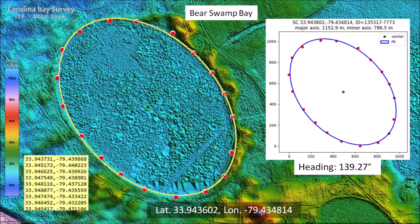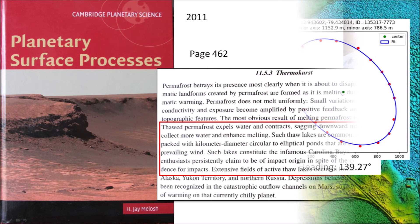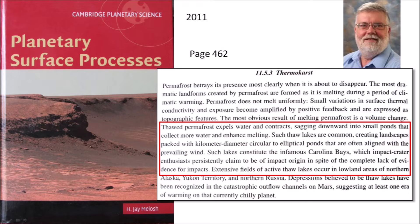This test involves plotting points along the perimeter of the Carolina Bay and running a program to fit an ellipse to the points. The book by Professor Jay Melosh titled Planetary Surface Processes, published in 2011, acknowledges the existence of the Carolina Bays but dismisses them with a scornful remark. The textbook says: 'Thawed permafrost expels water and contracts, sagging downward into small ponds that collect more water and enhance melting. Such thawed lakes are common, creating landscapes packed with kilometer-diameter circular to elliptical ponds that are often aligned with the prevailing wind. Such lakes constitute the infamous Carolina Bays, which impact crater enthusiasts persistently claim to be of impact origin in spite of the complete lack of evidence for impacts.'